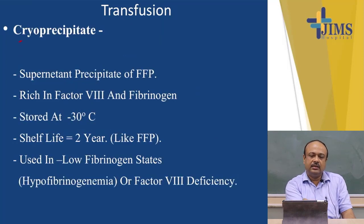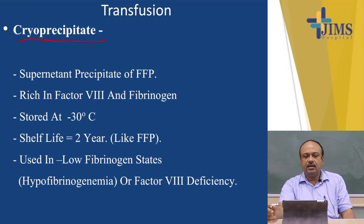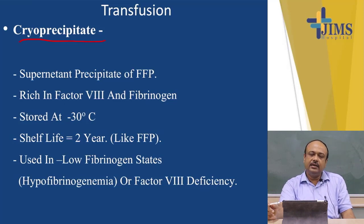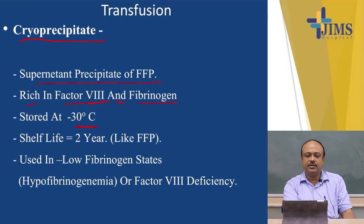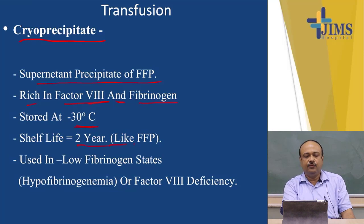Coming to another blood component — cryoprecipitate. Cryoprecipitate is the supernatant precipitate of fresh frozen plasma. It is rich in factor VIII and fibrinogen. It is stored at a temperature of minus 30 degrees centigrade and has a shelf life of 2 years, like FFP. Cryoprecipitate is used in low fibrinogen states — known as hypofibrinogenemia — or in cases of factor VIII deficiency.